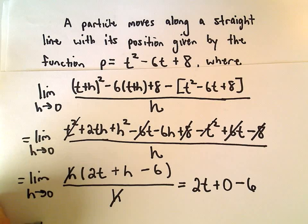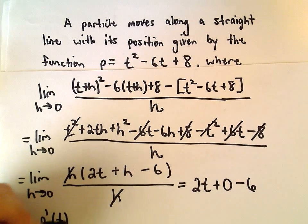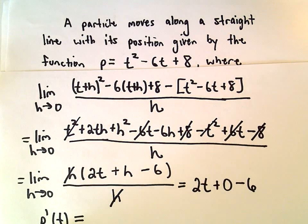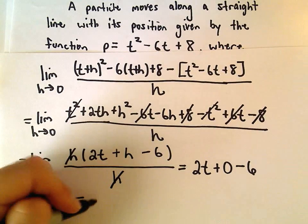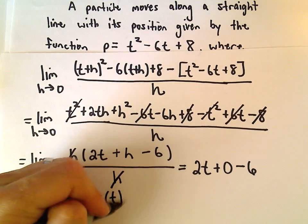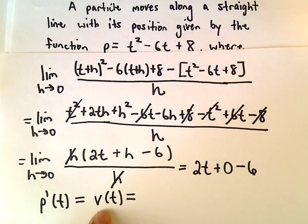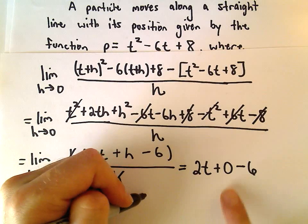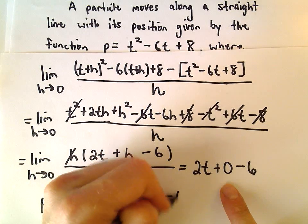We'll get our derivative, so p prime of t, but since our derivative is the derivative of position, we can also call this the velocity function. So it says the velocity at any time t will be 2t minus 6.